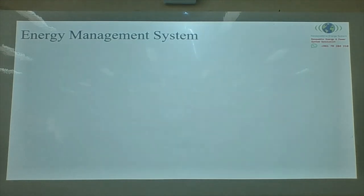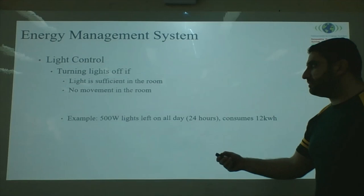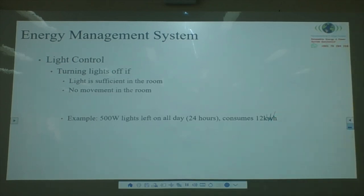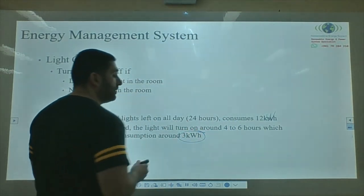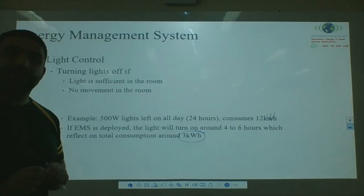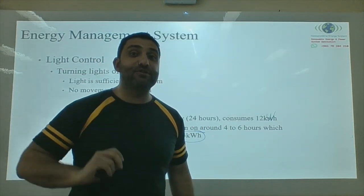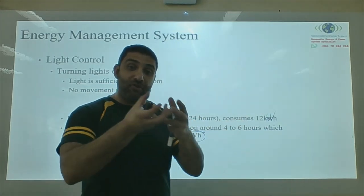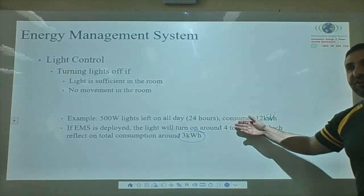A concrete example of EMS savings: a 500 W light left on for 24 hours consumes 12 kWh. With an EMS turning it on for only 4–6 hours, consumption drops to 3 kWh — a 9 kWh saving. Since lights are usually on when there is no sun (battery-powered), at 50% DoD this saves 18 kWh of battery capacity. That reduction is achievable with very cheap light control technology.